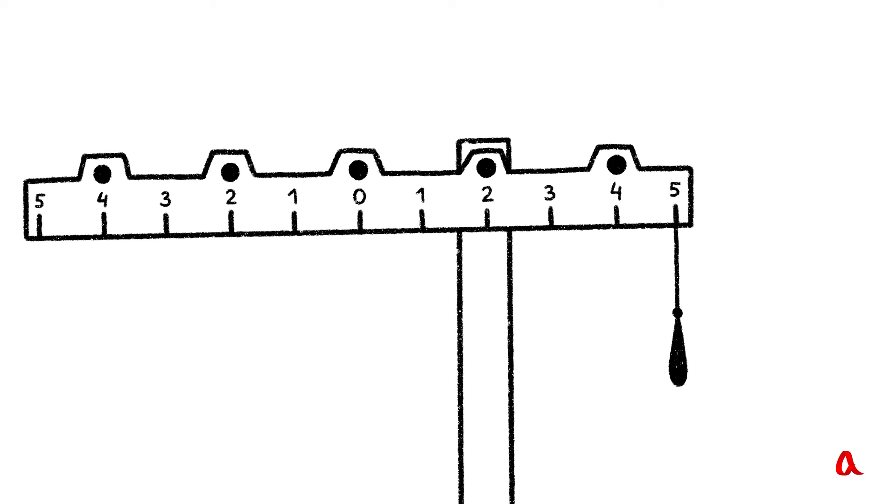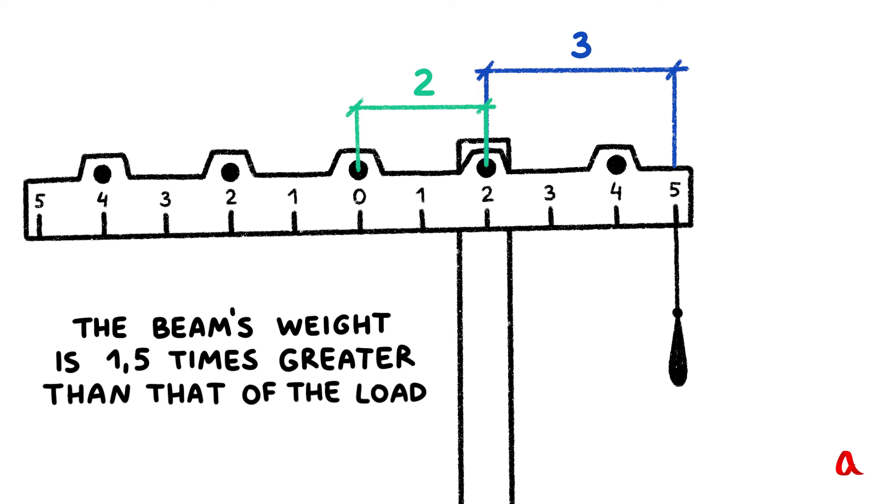We can even find out what the weight of the beam is. The load's arm from mark 2 to mark 5 equals 3 units. The beam's arm is from its gravity center to its suspension axis, which is from 0 to 2, so it equals 2 units. The beam's arm is 1.5 times shorter than the load's arm, so the beam's weight is 1.5 times greater than that of the load.